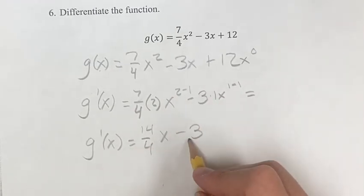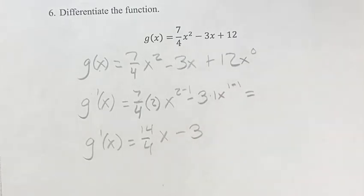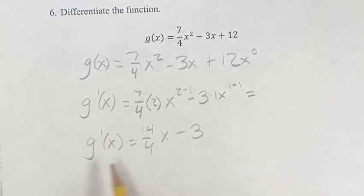Minus 3. 3 times 1 is 3. x to the 0 is just 1, so you can get rid of that. So g'(x), the derivative of g(x), is equal to (14/4)x - 3.